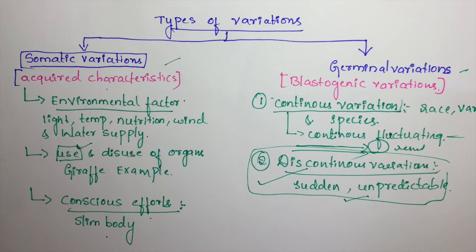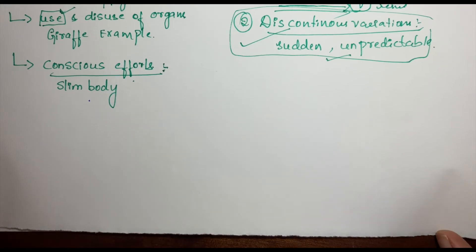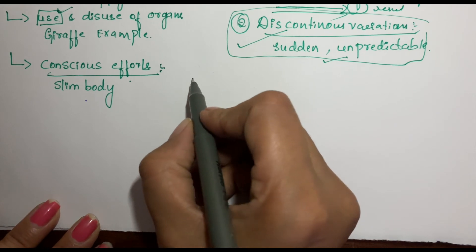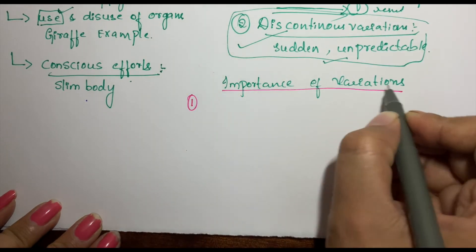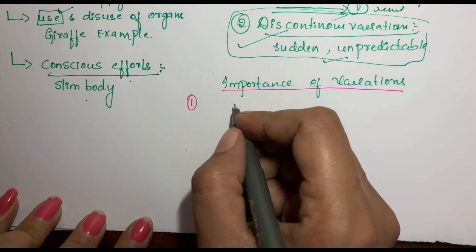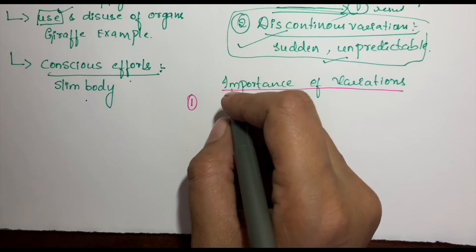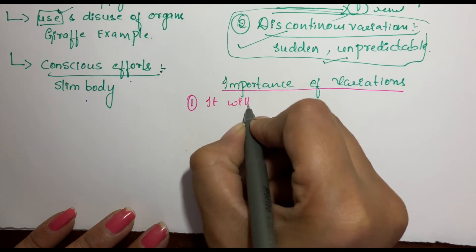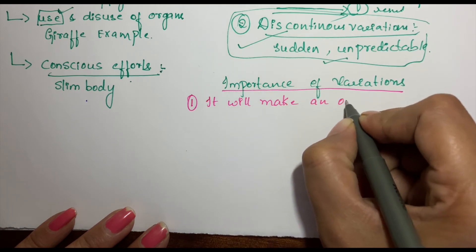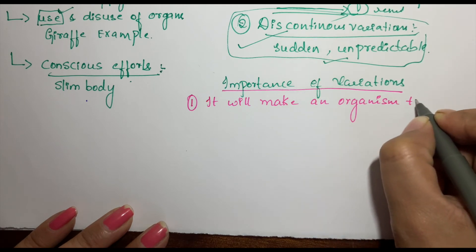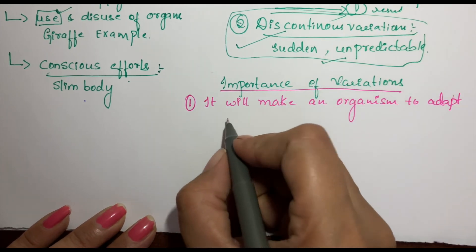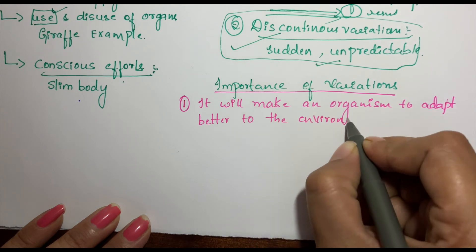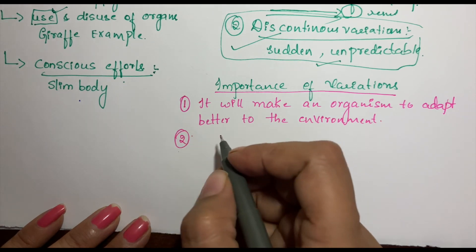So we have the two types of variations — somatic and germinal. Now, why are variations actually important? The first importance is that variations allow an organism to adapt better to the environment.